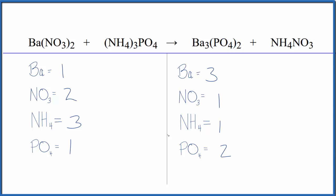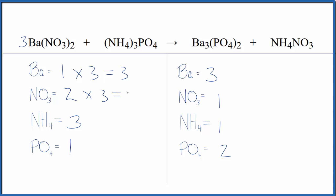You can very quickly count the atoms up using this method, and time does matter on exams. Let's balance the barium first. We'll put 3 here — 1 times 3 — those are balanced. And now we have 2 times 1, so we have 2 times 3, that gives us 6 of these nitrate ions. We could just put a 6 here. We have 1 nitrate times 6 — those are balanced.